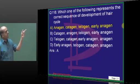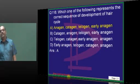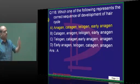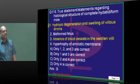Anagen, catagen, telogen — that is how the hair passes through various phases as you are becoming assistant professor towards associate professor towards HoD.